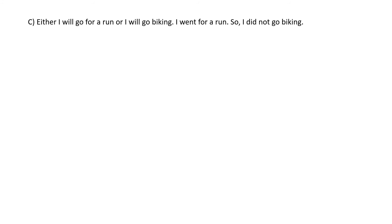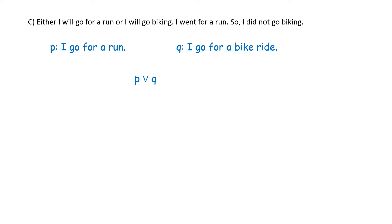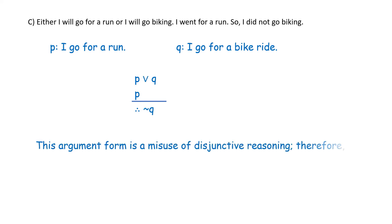Part C: either I will go for a run, or I will go biking. I went for a run, so I did not go biking. Let P be 'I'll go for a run' and Q be 'I will go biking.' Symbolically: P ∨ Q; P; therefore ¬Q. This argument form is the misuse of disjunctive reasoning, and therefore it is invalid.